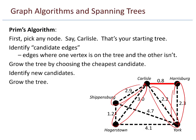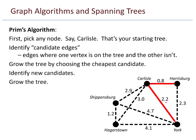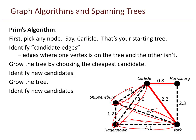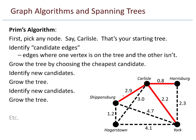I identify the cheapest candidate — maybe it's the 2.2. Grow the tree. Now, identifying new candidates: previously I had the edge of weight 2.3, but this time I can't include that — it would make a cycle. The trick is one vertex has to be on the tree and the other has to be not on the tree, to avoid making cycles. The cheapest candidate now looks like the 2.9, so we grow that one.